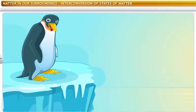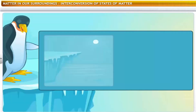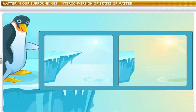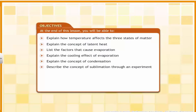It's a warm, sunny day and the icebergs have started to melt. Water becomes solid at very low temperatures. Ice melts and changes back to water when the temperature increases. This phenomenon of matter converting from one state to another is known as interconversion of the states of matter. In this lesson, you will learn about the interconversion of the states of matter. You will also learn about the effect of temperature and pressure on gases.